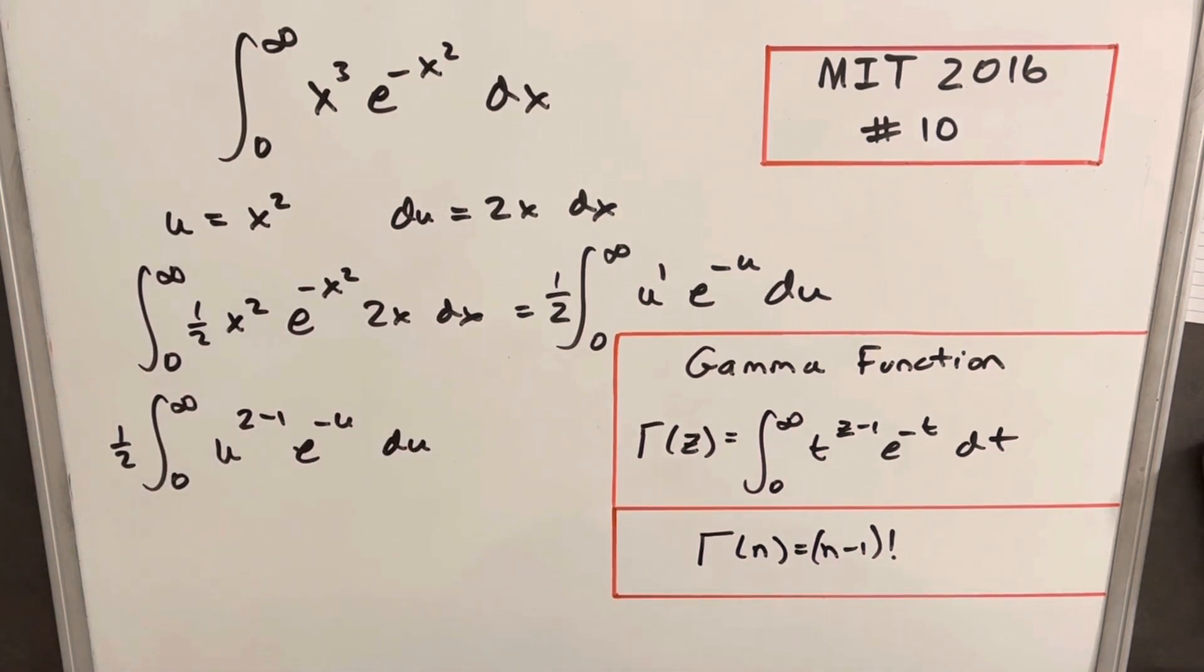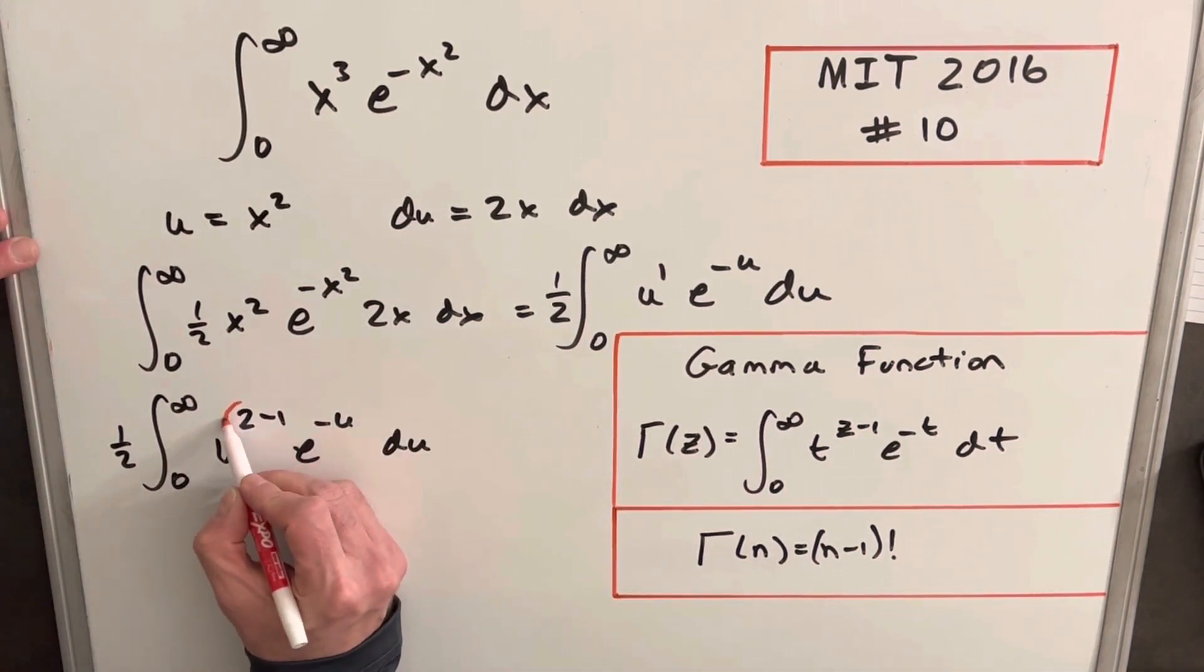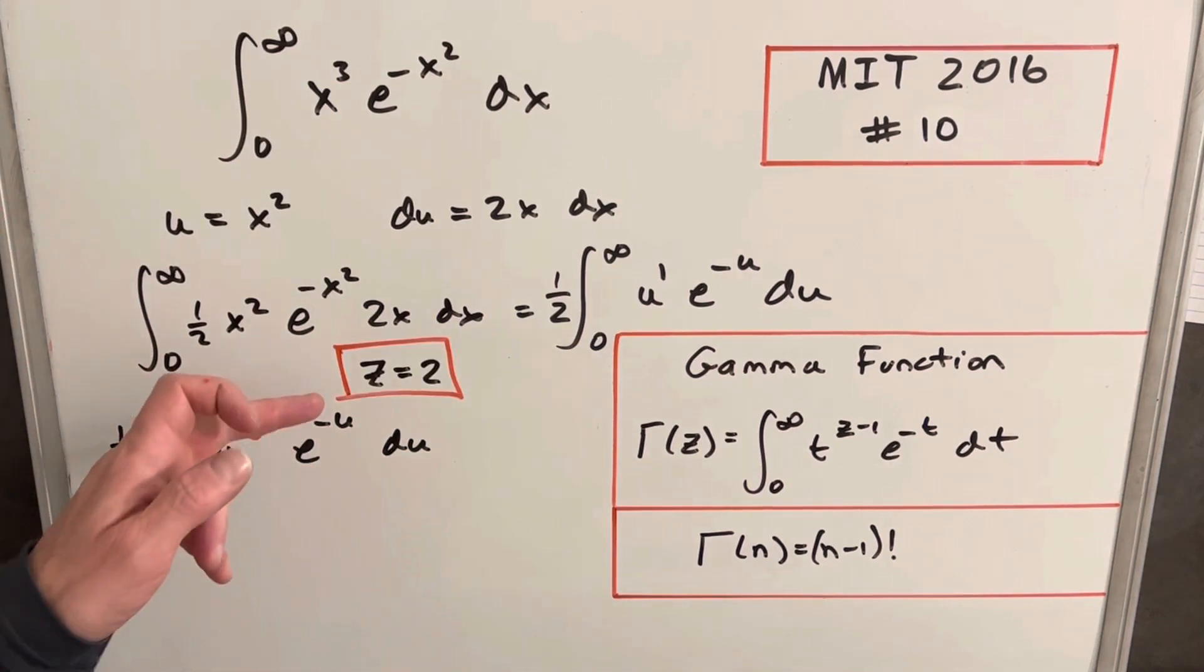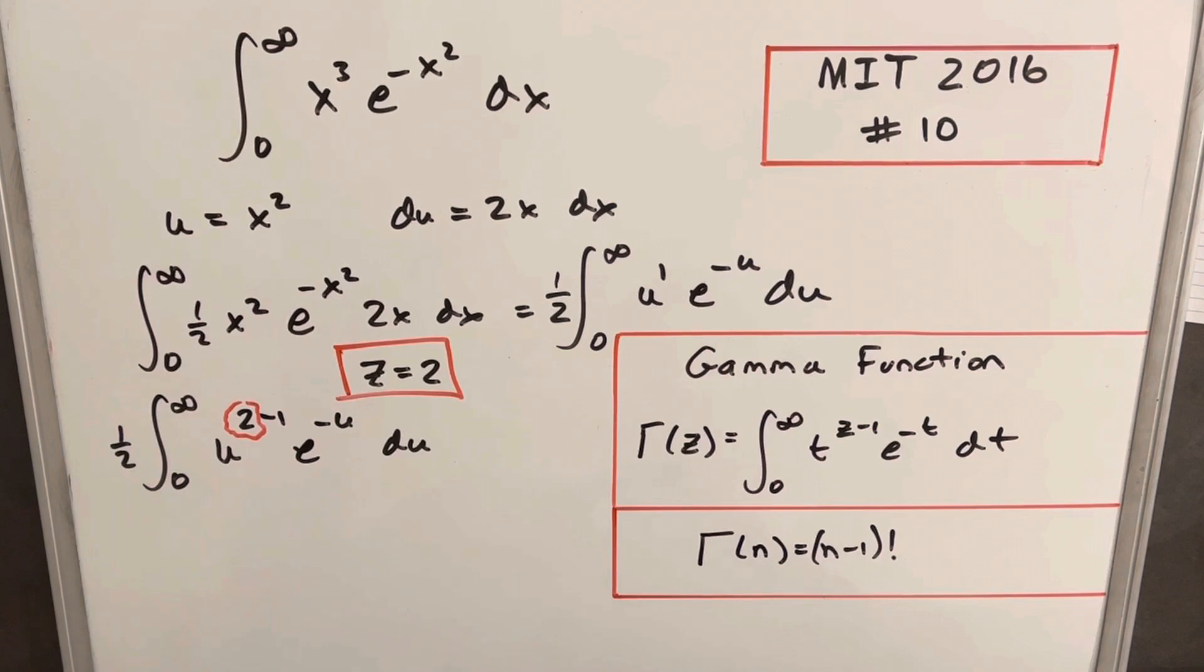So then what we've done is, we've said our z value in this equation is 2. And then if our z value is 2, then we have the gamma function, we have the gamma of 2.